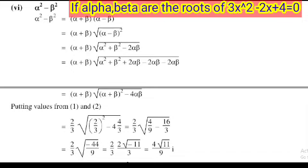Putting the values of α + β and αβ: (2/3) × √((2/3)² - 4 × 4/3). So (2/3) × square root of 4/9 minus 16/3.